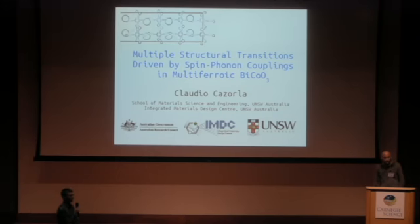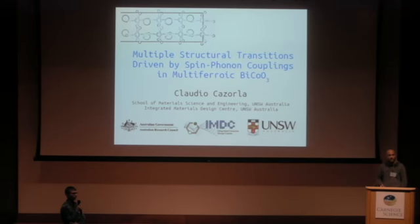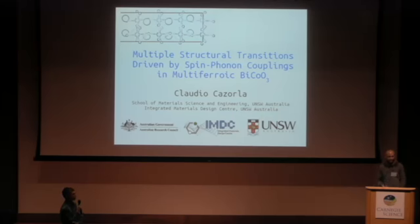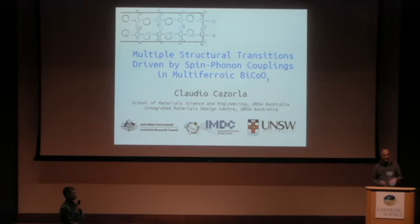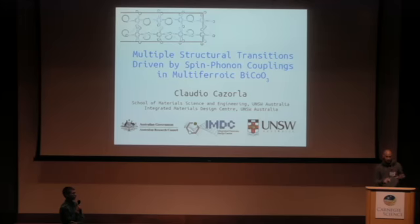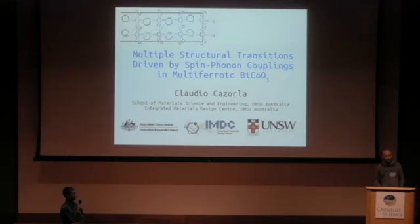Question: When you construct the phase diagram, I see only single-phase regions. Have you considered the possibility of coexisting phase regions? Reply: In reality you may have coexistence, since these are first-order phase transitions. In our calculations we are considering single crystals and very smooth conditions, so in reality the boundaries are probably not that clear. We haven't considered coexistence between phases, but that is most likely what would be observed in reality.